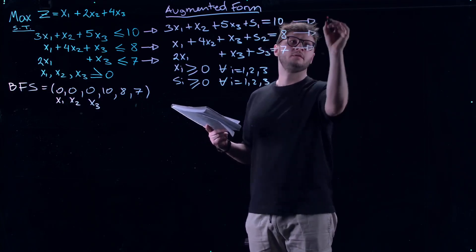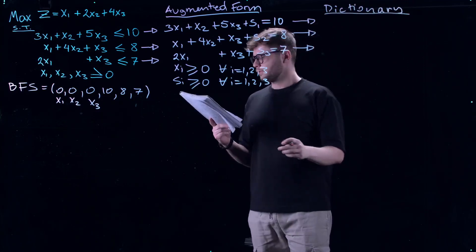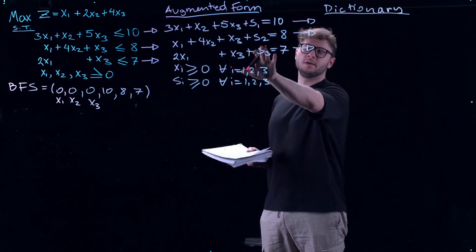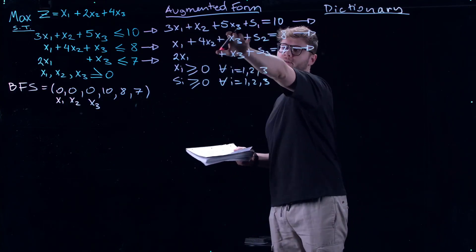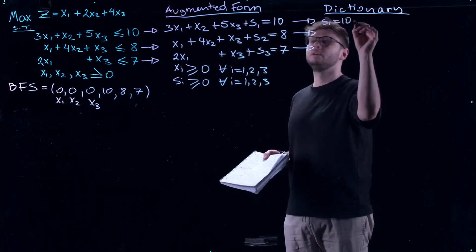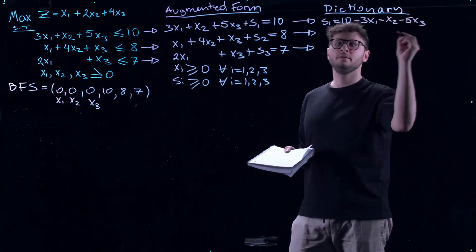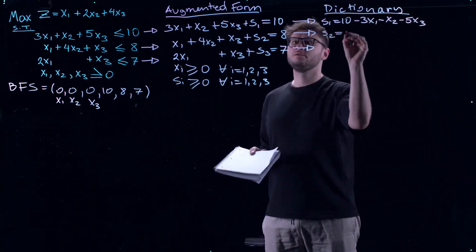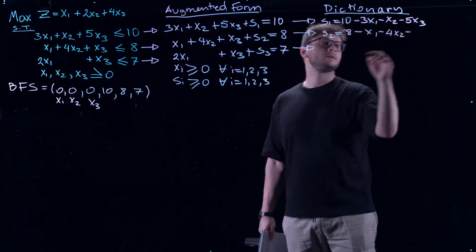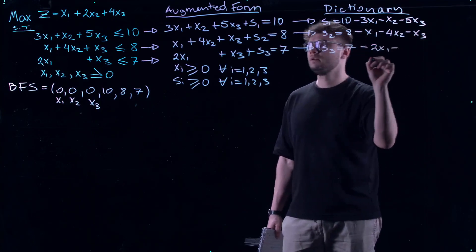In the dictionary form, we solve for the slack variables. So: s1 = 10 − 3x1 − x2 − 5x3; s2 = 8 − x1 − 4x2 − x3; s3 = 7 − 2x1 − x3.